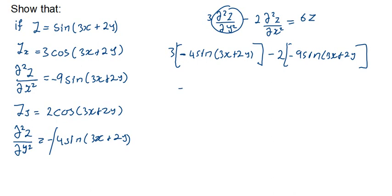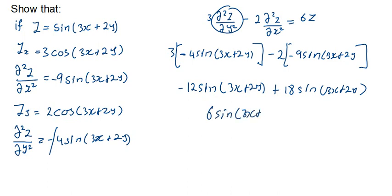This gives us minus 12 sine of 3X plus 2Y plus 18 sine of 3X plus 2Y. These are like terms, so minus 12 plus 18 gives us 6 sine of 3X plus 2Y.